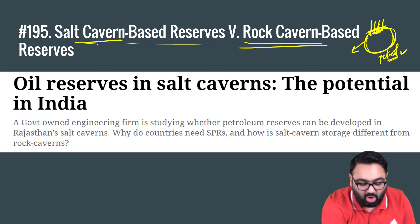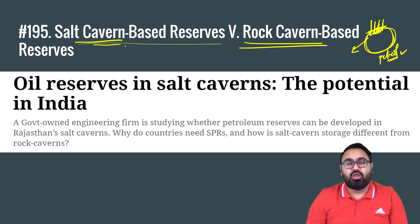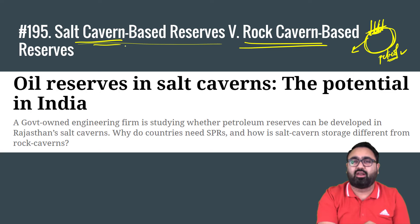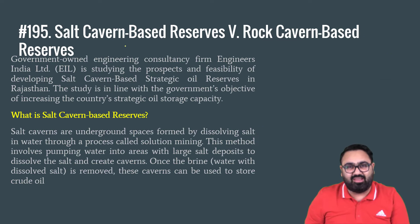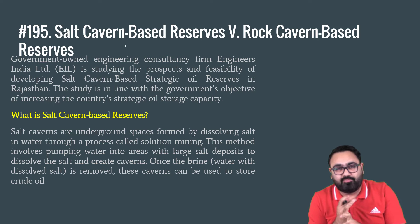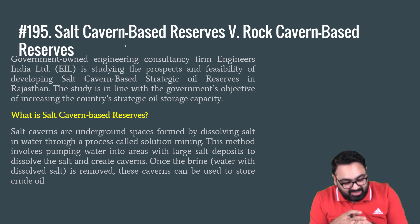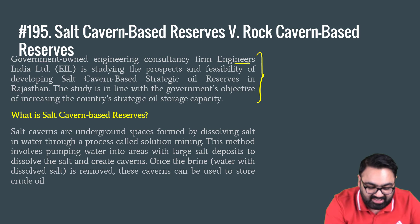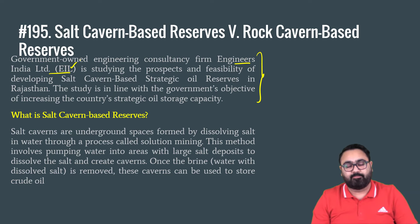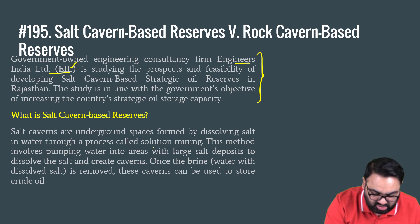So rather than drilling into rocks, you find areas with a lot of salt reserves, dissolve the salt by putting in water, create an empty vacuum, and store your oil there. This process of dissolving salt and removing it to create the empty space is called solution mining. It involves pumping water into areas with large salt deposits and then making sure these caverns can be used to store oil in the long run. Rock-based caverns, which India has been using, are constructed by drilling, blasting, and removing rock layers, then creating storage space using natural rock barriers.